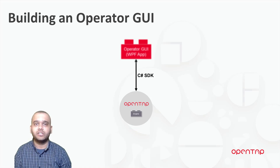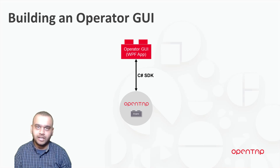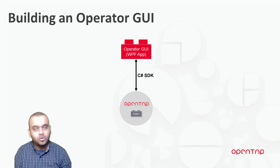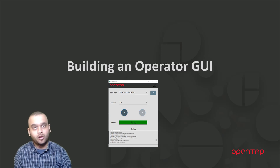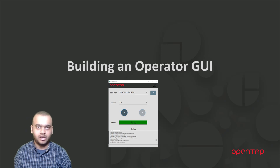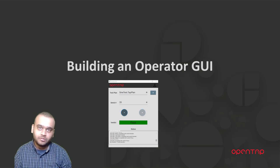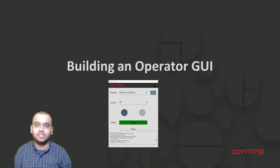I will also be releasing the final source code of the operator GUI on GitLab, so that you can use it as is or use it as a starting point for building your own custom operator GUIs. To summarize, this series is going to be about building a simple graphical user interface called an operator GUI that can select a test plan, run it, and then view the results and verdicts, using the C Sharp SDK for interacting with the OpenTap engine. In the next video, we are going to be creating our project, setting up all our dependencies, and creating some basic elements of the GUI. Stay tuned and see you in the next video.